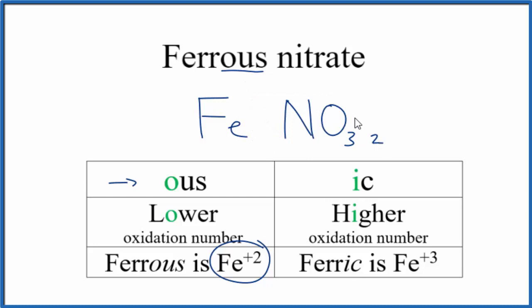Because we have two of these nitrate ions, we need to put parentheses around the NO₃. That means the